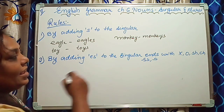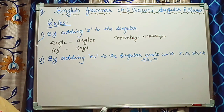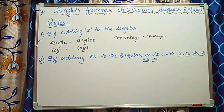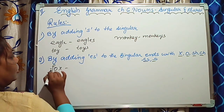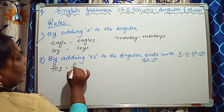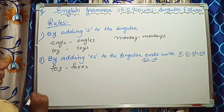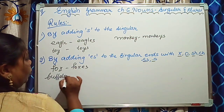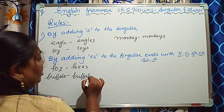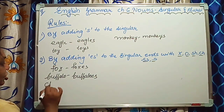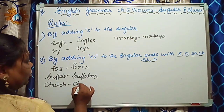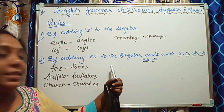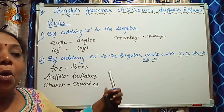In words ending with X, O, SH, or S, we add ES. For example, fox — X is there — so foxes. Buffalo ends with O, so buffaloes. Mango becomes mangoes.